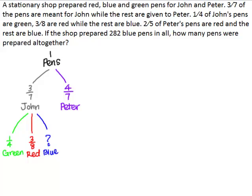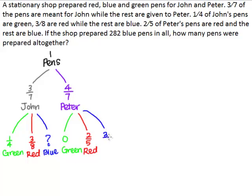From the question, we know that two-fifths of Peter's pens are red and the rest are blue, which means that Peter does not have any green pens. Two-fifths of Peter's pens are red, which means that three-fifths of Peter's pens are blue.